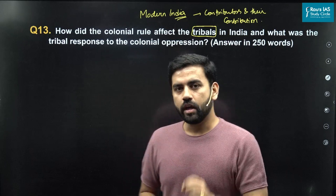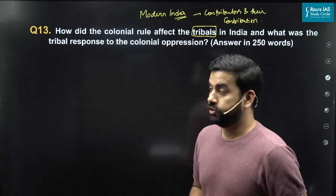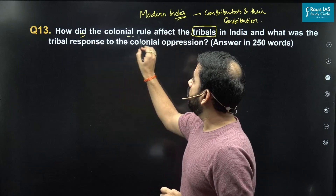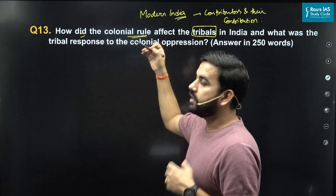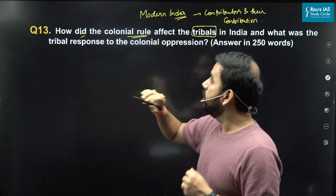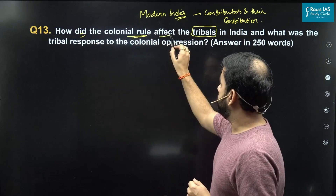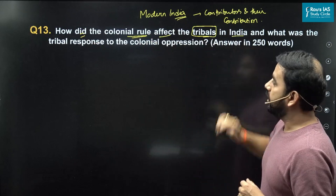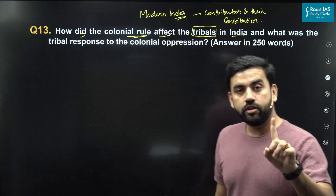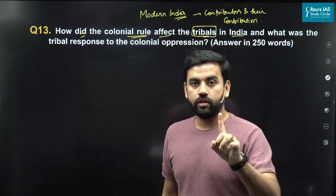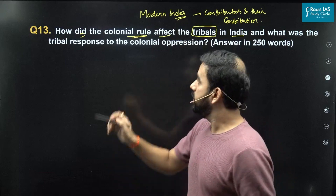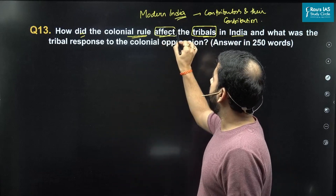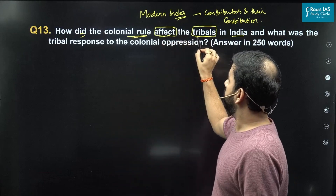Now let's go to the question. The question asks: how did the colonial rule, that is the British rule, affect the tribals in India? This is the first part of the question. The question can be divided into two parts: first, how did it affect the tribals, and second, how did they respond.